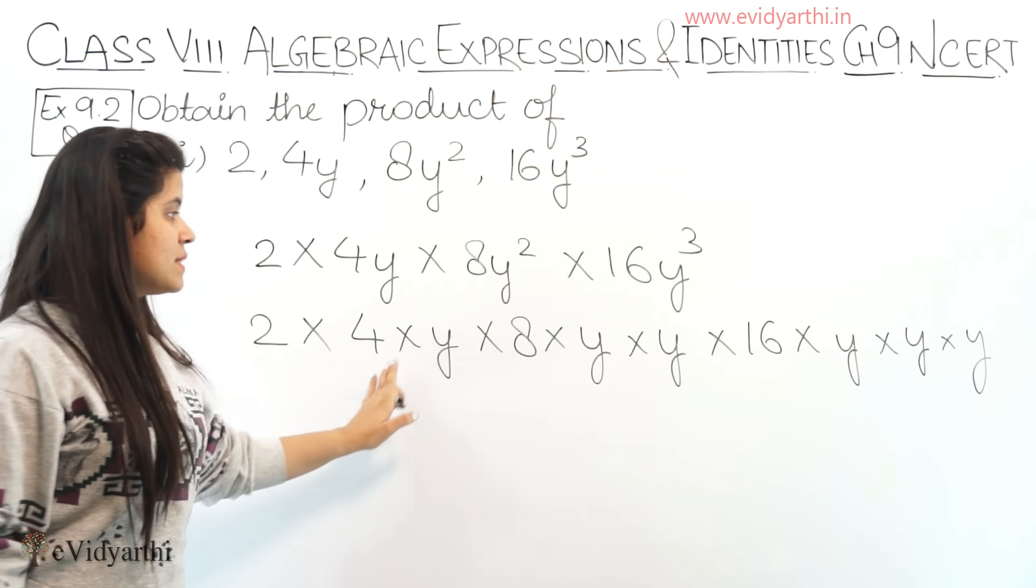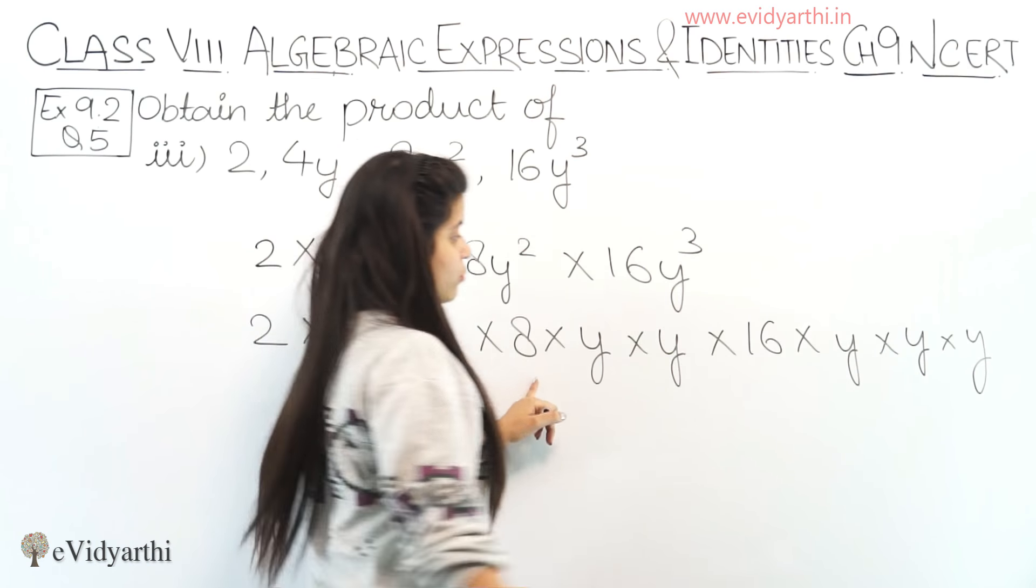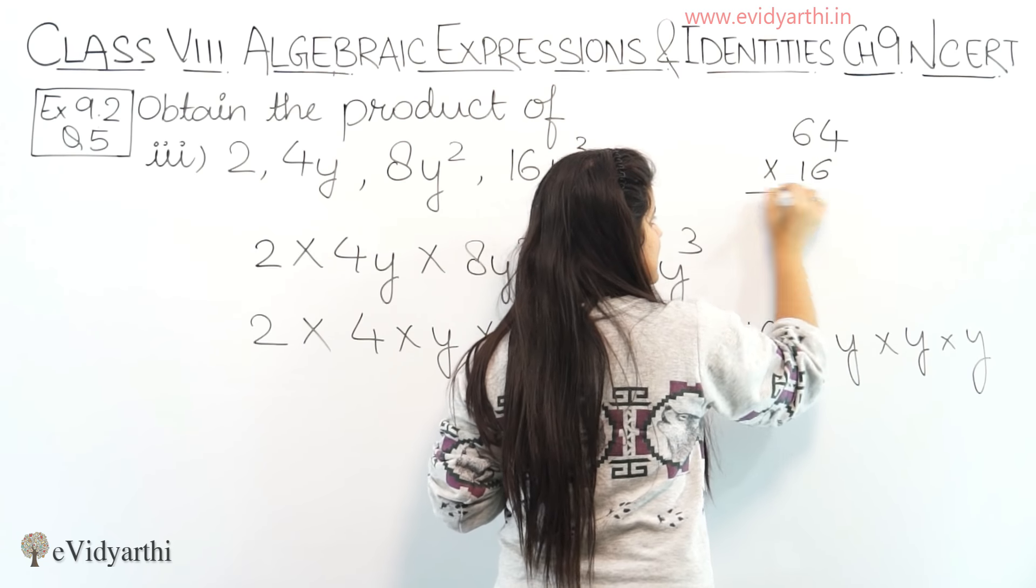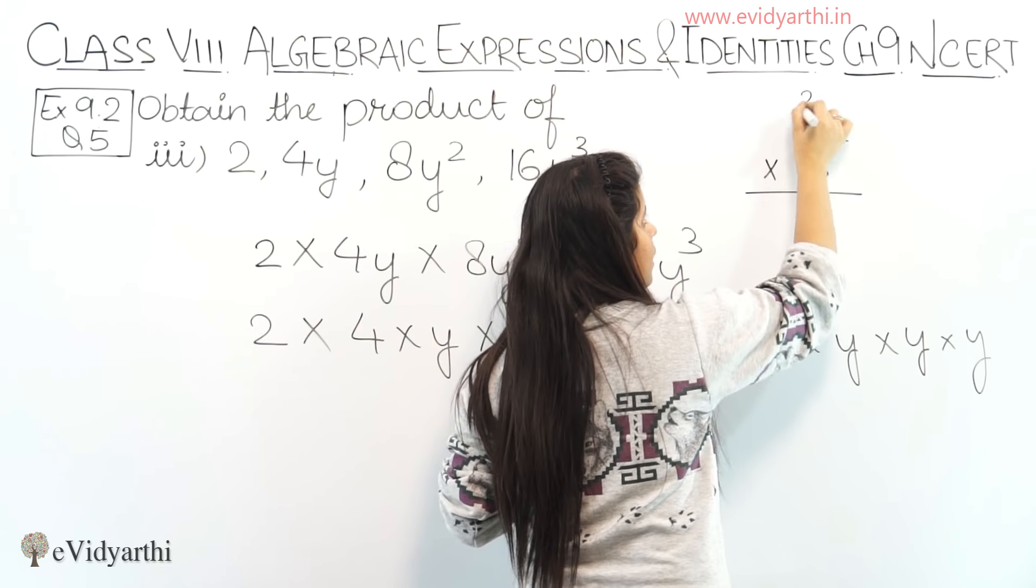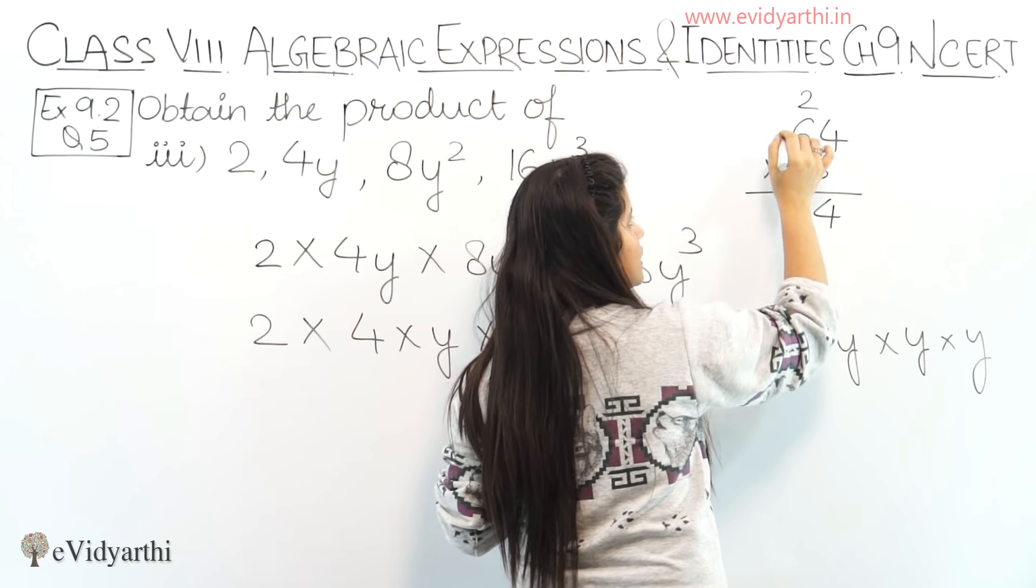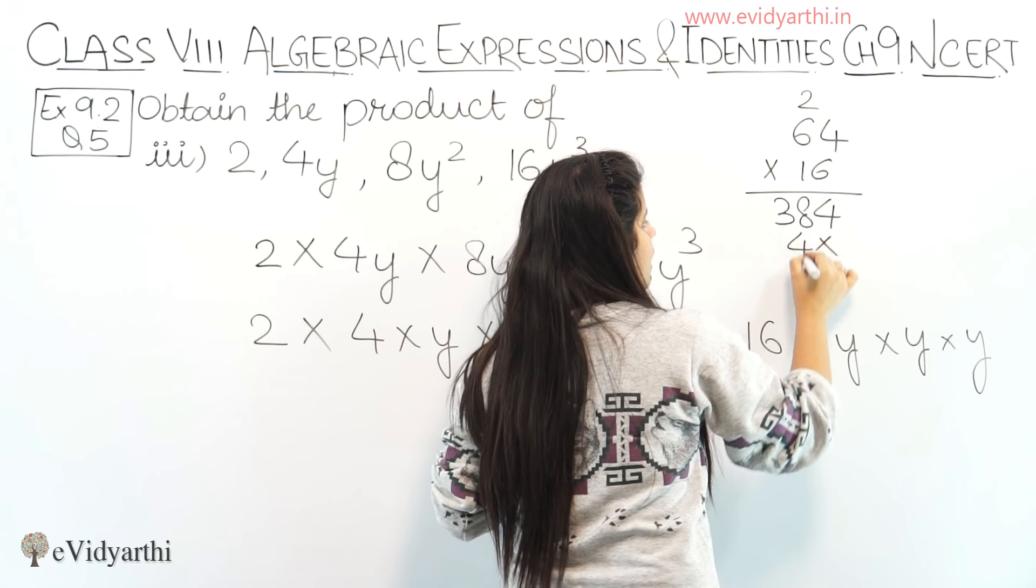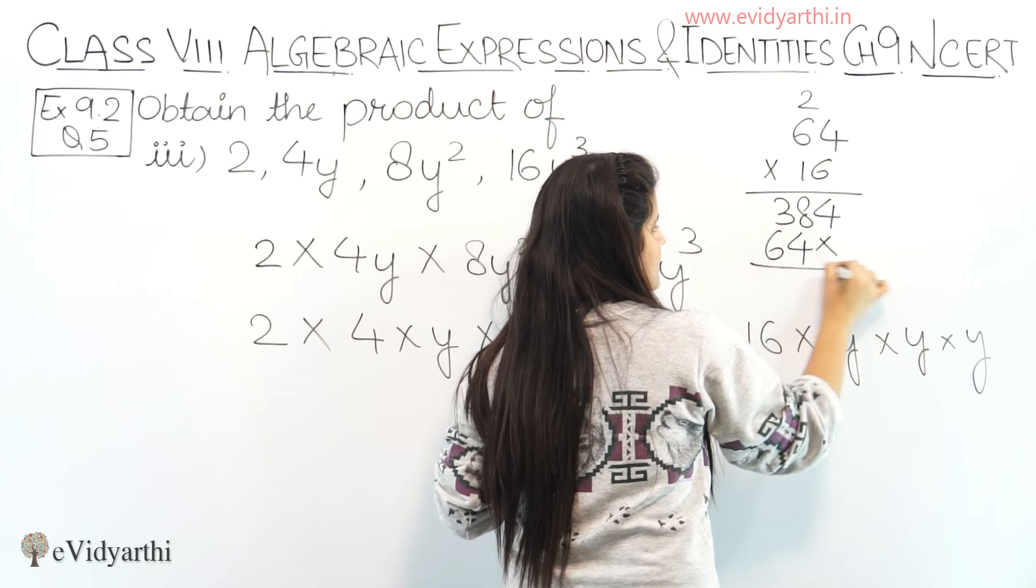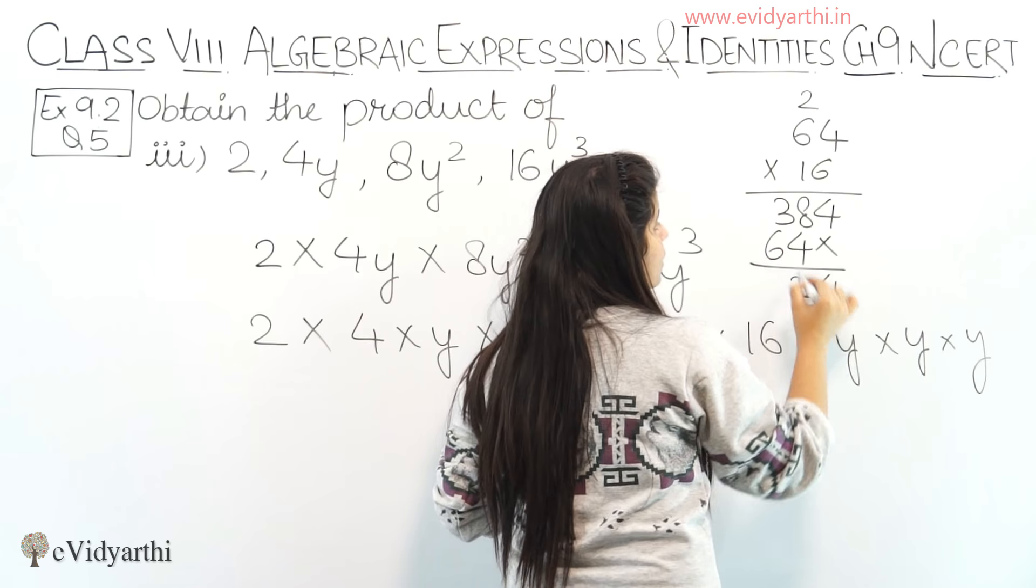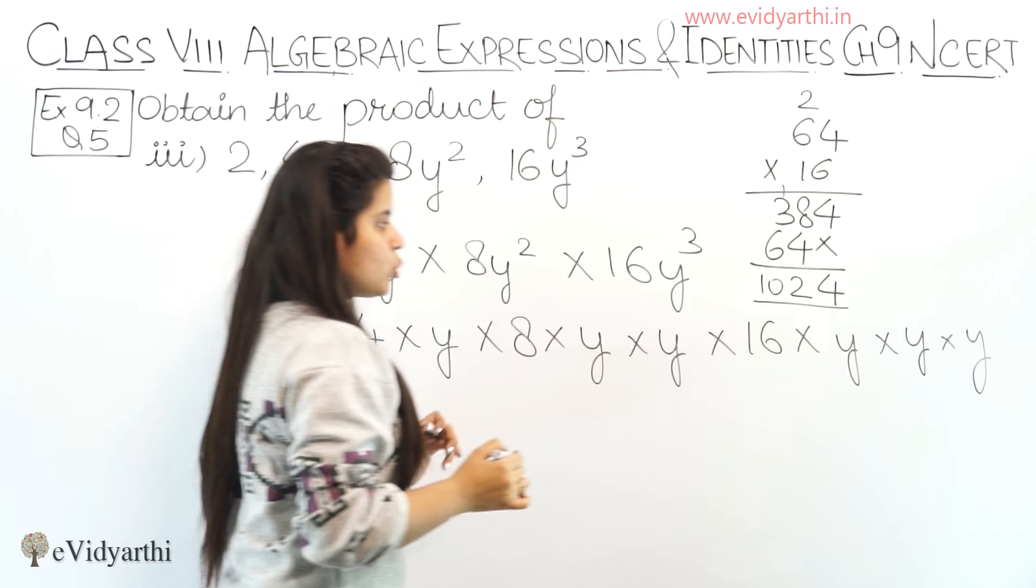Now we have numbers. Let's multiply them. So 2 fours are 8, 8 into 8 is 64. Now 64 into 16. Let's multiply this: 6 fours are 24, 6 sixes are 36 plus 2 is 38. So this is 3, 8, 4. And then 1 four is 4, 1 six is 6, and 8 plus 4 is 12, so we have 1024.